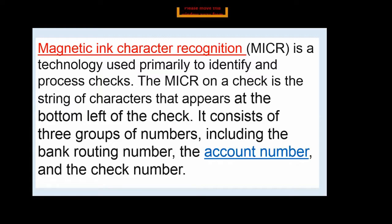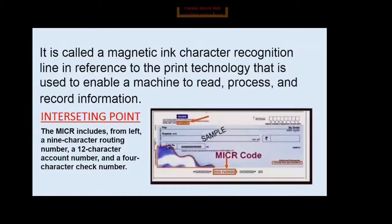Magnetic Ink Character Recognition (MICR) is a technology used primarily to identify and process checks. The MICR on a check is a string of characters that appears at the bottom left of the check. It consists of three groups of numbers: the bank routing number, the account number, and the check number.